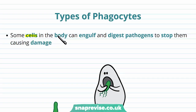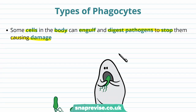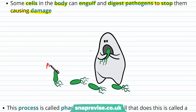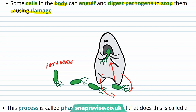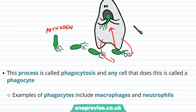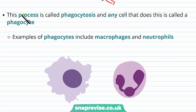Some of the cells found in the body as part of the immune system can engulf and digest pathogens to stop them from causing damage. What these cells do is encounter a pathogen and the cell literally overfills the pathogen and engulfs it, bringing it into the cell's contents and breaking it down. The process of doing this is called phagocytosis, and any cell that does this can be called a phagocyte.